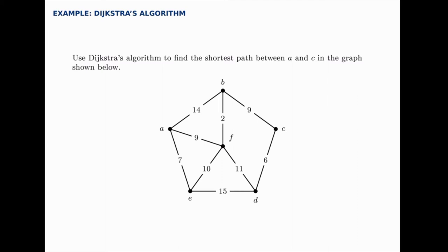Use Dijkstra's algorithm to find the shortest path between a and c in the graph shown below. We're trying to start at a and find a path to c using the shortest possible distance in total. You could probably do this one with brute force just because it's small enough, but we want to illustrate Dijkstra's algorithm and use it carefully to find the optimal path.